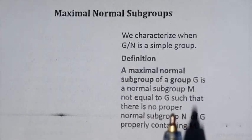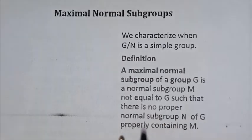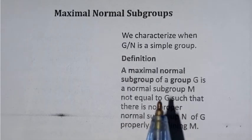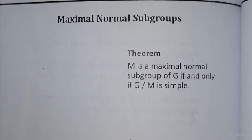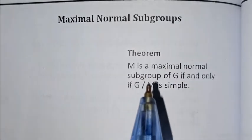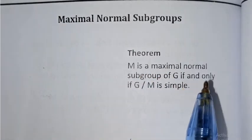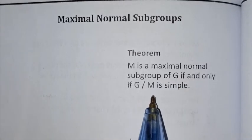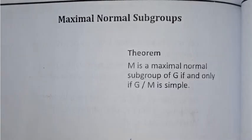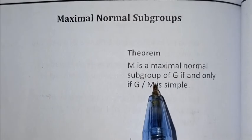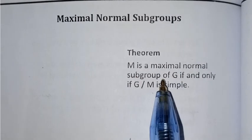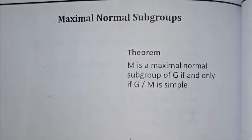If there is no proper normal subgroup that properly contains M, then we say M is a maximal normal subgroup. We have a theorem: M will be a maximal normal subgroup if and only if G over M is a simple group.